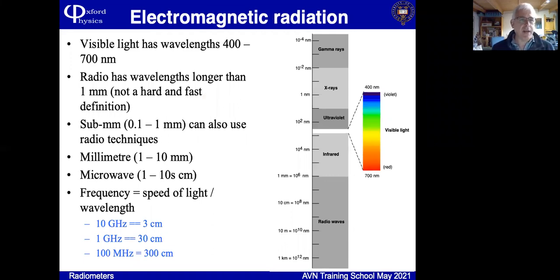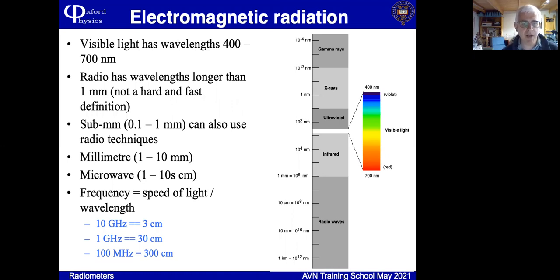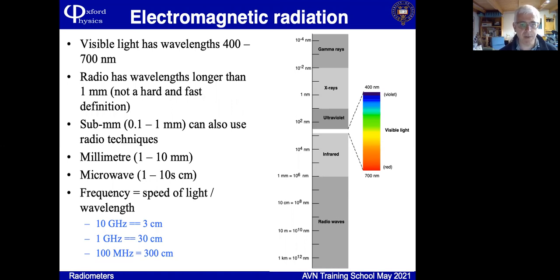Radio is part of the electromagnetic spectrum. It's a big chunk towards the long wavelength end of the spectrum. Light sits in the middle of the spectrum, just a relatively small range of two to one in frequency, but radio waves cover a much, much bigger range of frequencies, roughly from a millimetre up to as long in wavelength as you like.